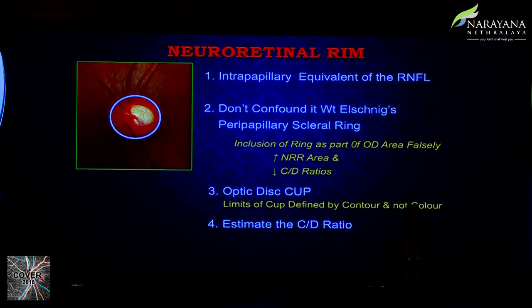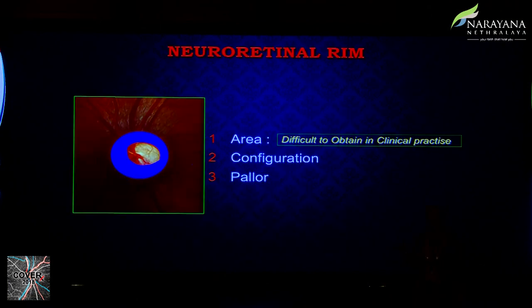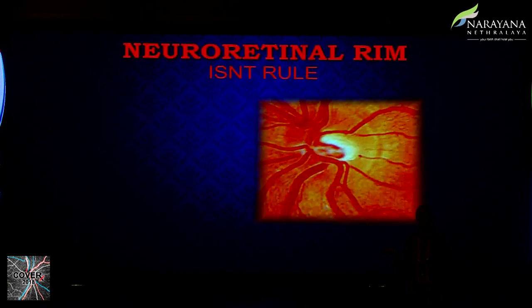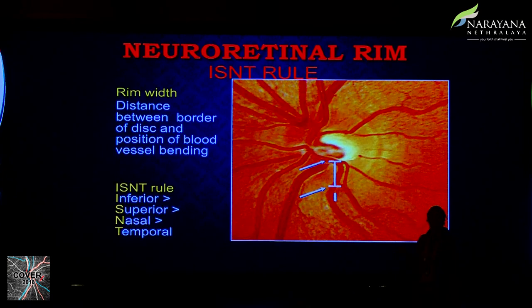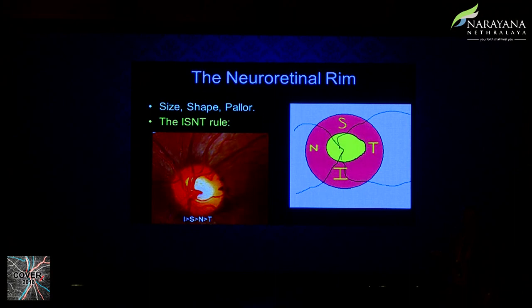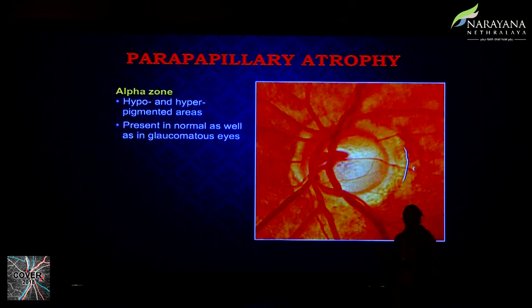The neuroretinal rim is of paramount importance. You need to define the cup limits by contour, not by color, and assess the area, configuration, and pallor. The ISNT rule states that the inferior rim is the thickest, followed by superior, nasal, and finally temporal. The ISNT rule needs to be intact to reassure a patient that they do not need frequent follow-ups.